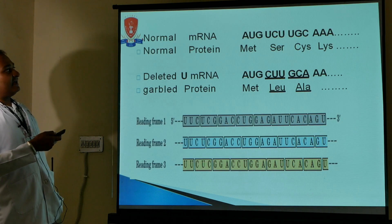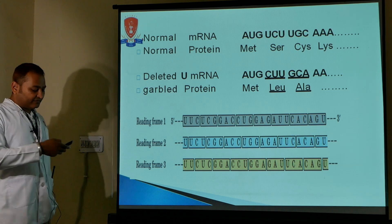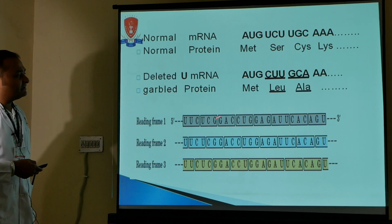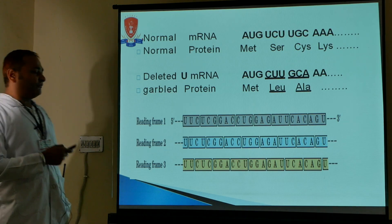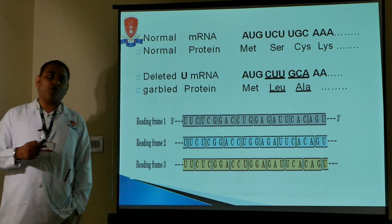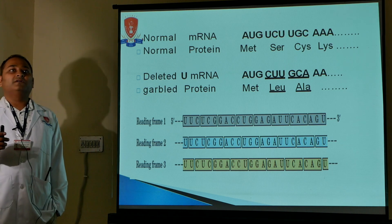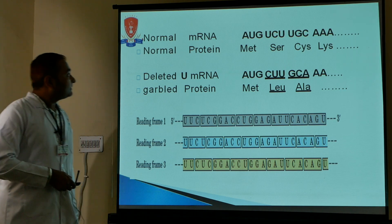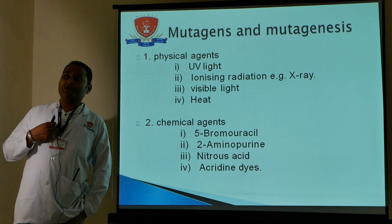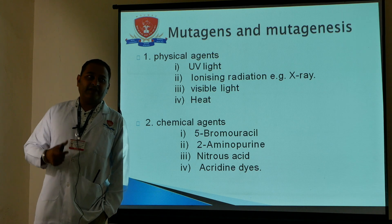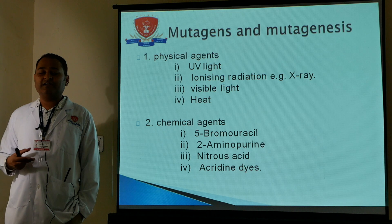Normal messenger RNA produces normal protein; deleted messenger RNA produces a garbled protein. If there is any change in the base-pairing sequence, normal proteins are not formed. If a protein is formed, it is not fully functional — these are called garbled proteins, and they cause disease. Mutagenesis and mutagens will be discussed in the next class.